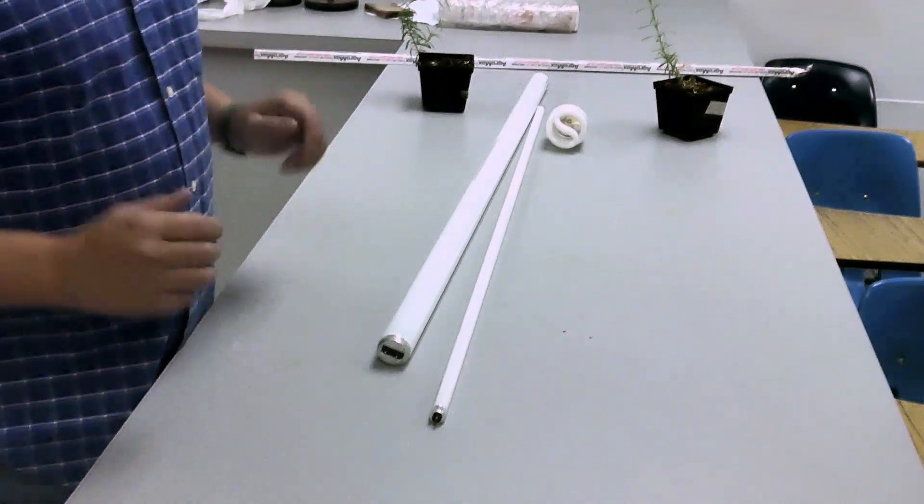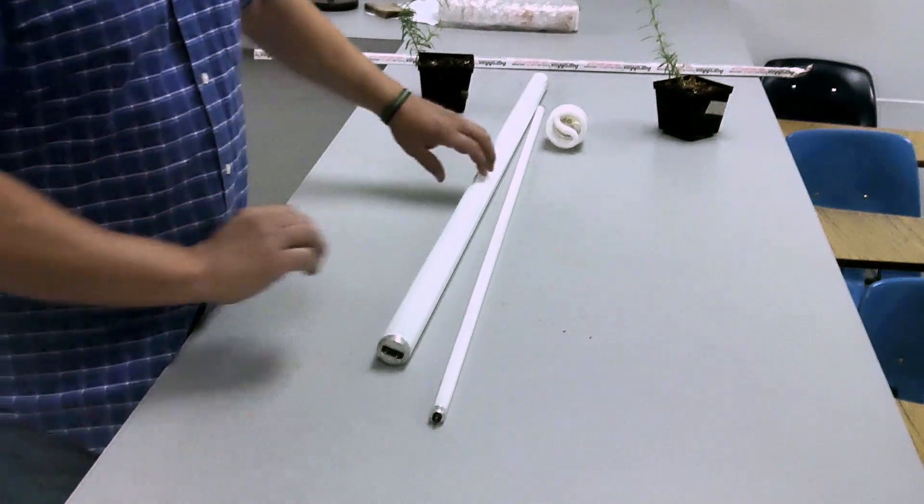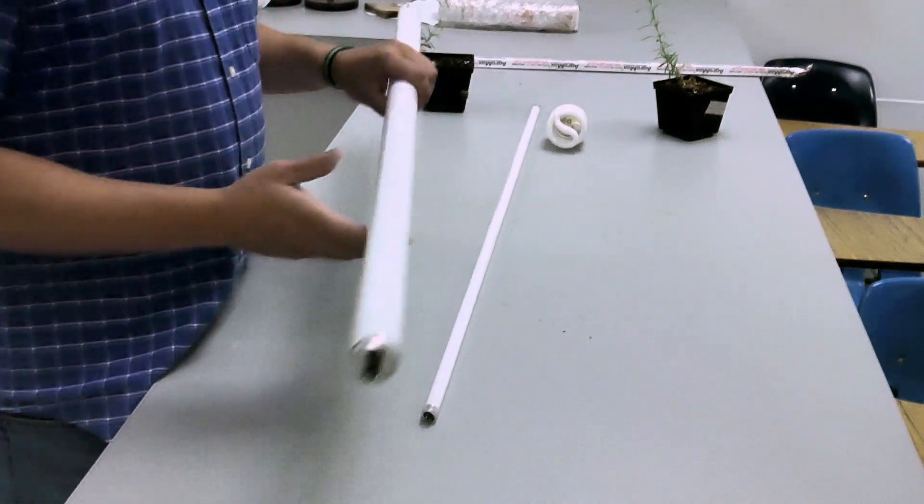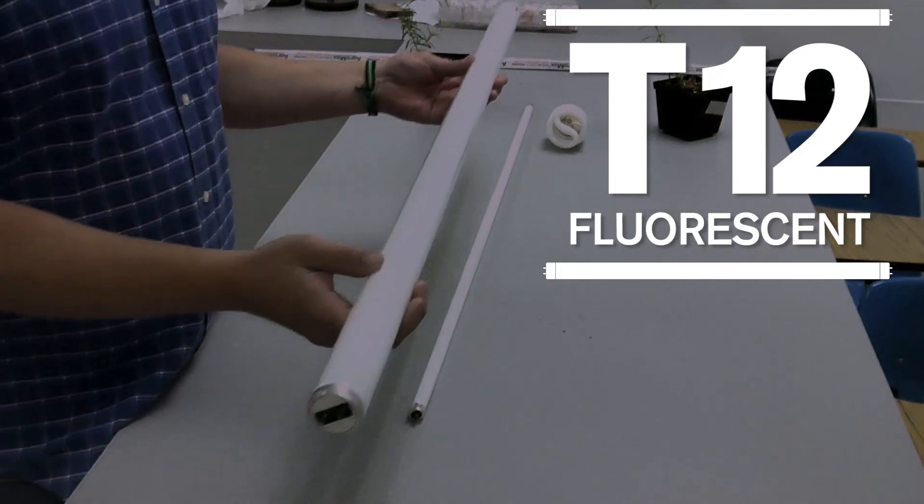If you're just starting out growing, a good choice for you are fluorescent lights. These are good for starting off. Now most of us are familiar with these big bulbs. You can get these at any hardware store.